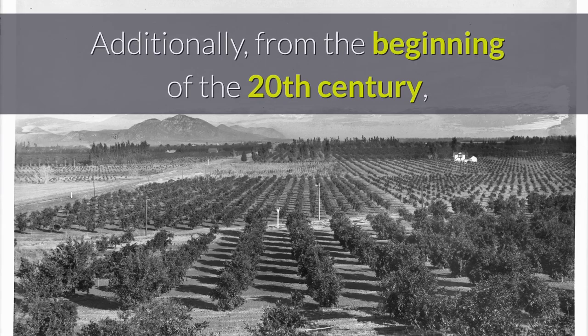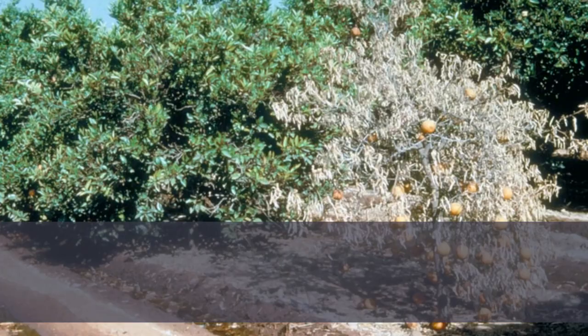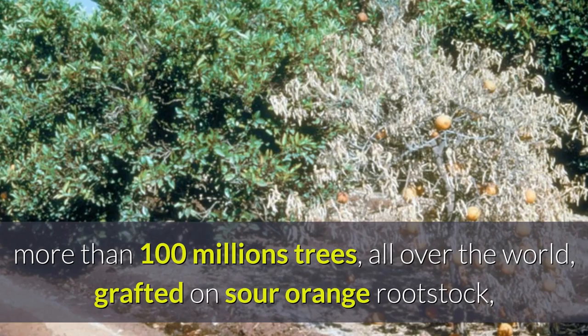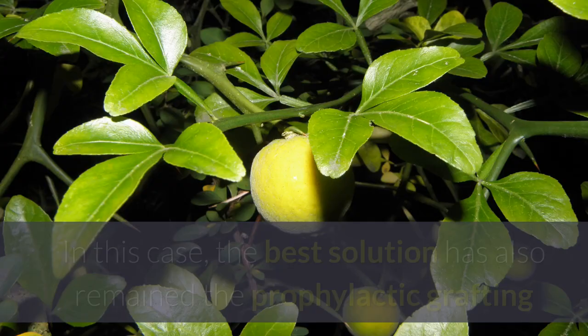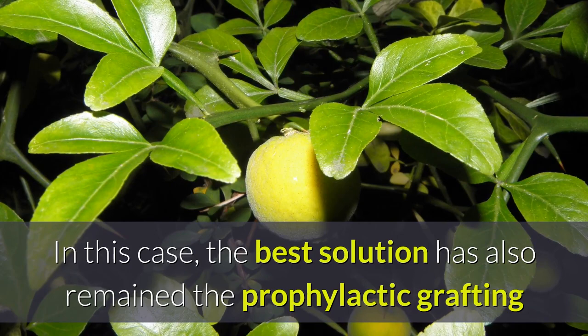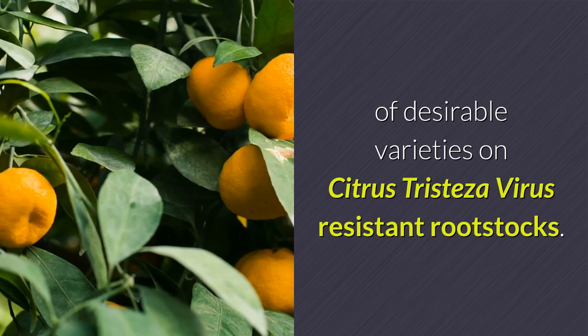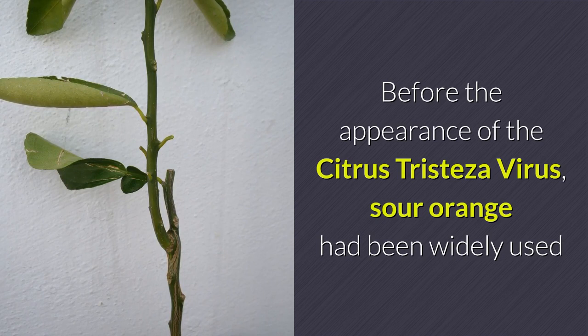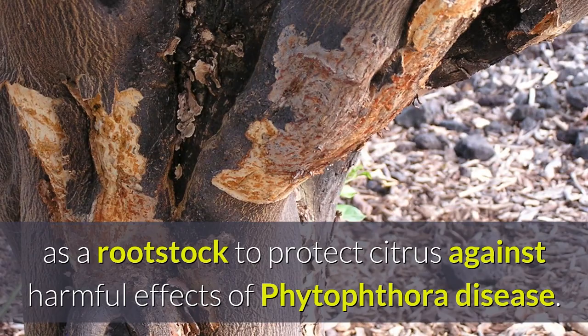Additionally, from the beginning of the 20th century, citrus tristeza virus destroyed thousands of hectares of citrus — more than 100 million trees — all over the world, grafted on sour-orange rootstock, which proved to be very susceptible to citrus tristeza virus. The best solution has also remained the prophylactic grafting of desirable varieties on citrus tristeza virus-resistant rootstocks. Before the appearance of citrus tristeza virus, sour-orange had been widely used as a rootstock to protect citrus against harmful effects of Phytophthora disease.